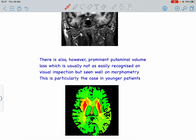There is prominent putaminal volume loss that is not well appreciated on visual inspection but is well seen in morphometry. This is particularly the case in younger patients. In this red color morphometry, we can see the prominent putaminal volume loss.